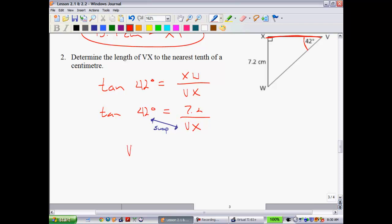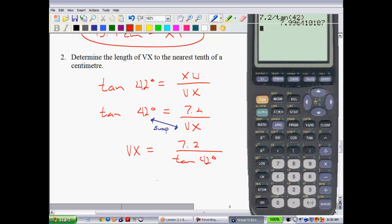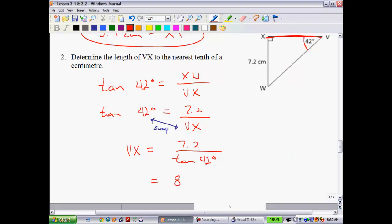So when we do that, we have VX is equal to 7.2 divided by the tangent of 42 degrees. We'll put that into our calculator. 7.2 divided by the tangent of 42. And we get 7.99 centimeters. So we'll round that to the nearest tenth, which gives you 8.0 centimeters. You do have to put that .0 in when you're rounding to the nearest tenth.